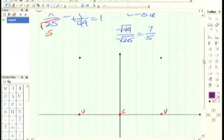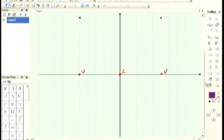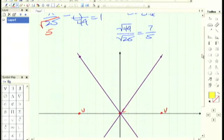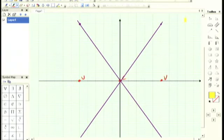And now if I draw in these asymptotes, it's going to tell me where the hyperbola does not cross. And because the vertices are where they are, I know that the curve is going to look something like this.